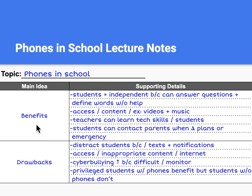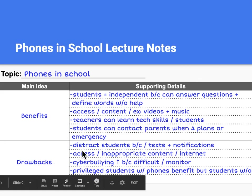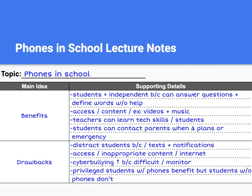Let's look at the supporting details for benefits: students are independent because they can answer questions and define words without help; access to content, for example videos and music; teachers can learn tech skills from students; students can contact parents when there's a change in plans or emergency. And then for drawbacks: distract students because of texts and notifications; access to inappropriate content on internet; cyberbullying increases because difficult to monitor; and privileged students with phones benefit, but students without phones don't.